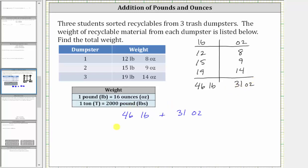Let's go ahead and do that. 46 pounds plus 31 ounces is equal to 46 pounds plus 16 ounces, which is one pound, plus 15 ounces. Again, 16 ounces plus 15 ounces is 31 ounces, but 16 ounces is equal to one pound.